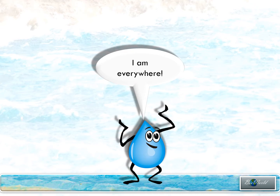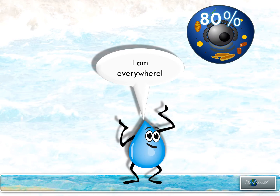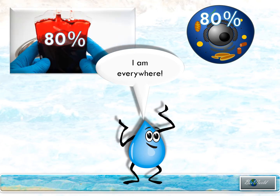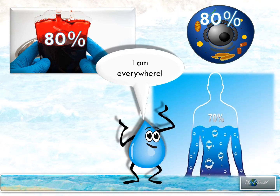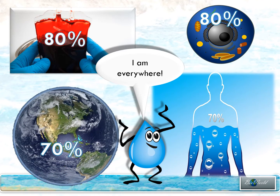Hello everybody. You can see that water is everywhere. It's in each and every cell of ours. 80% of the cytoplasm is water. 80% of our blood — the plasma part of the blood — is water. Even our whole body, 70% is water. And water is not only inside us, water is around us. 70% of our blue planet is water. So you can see very clearly, water is very important.